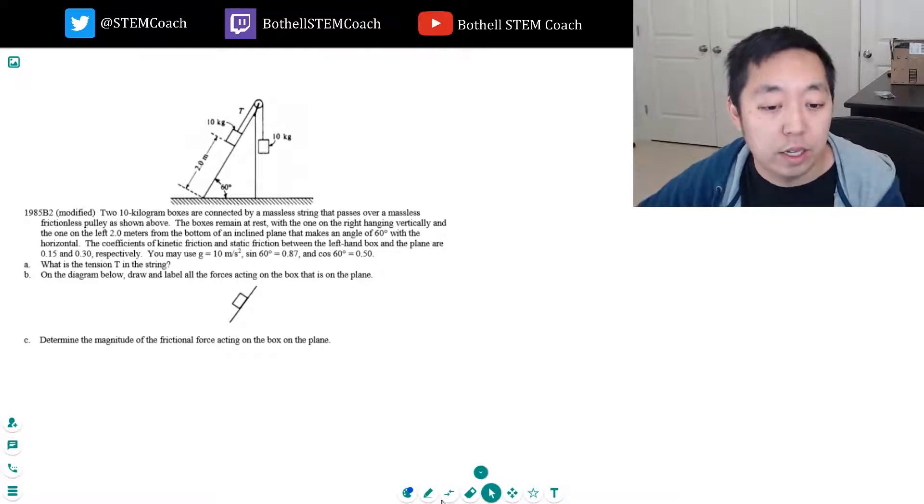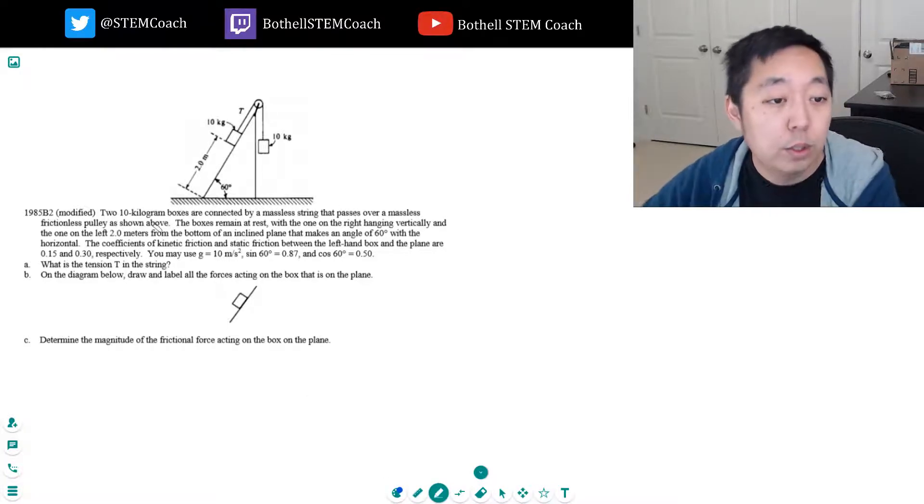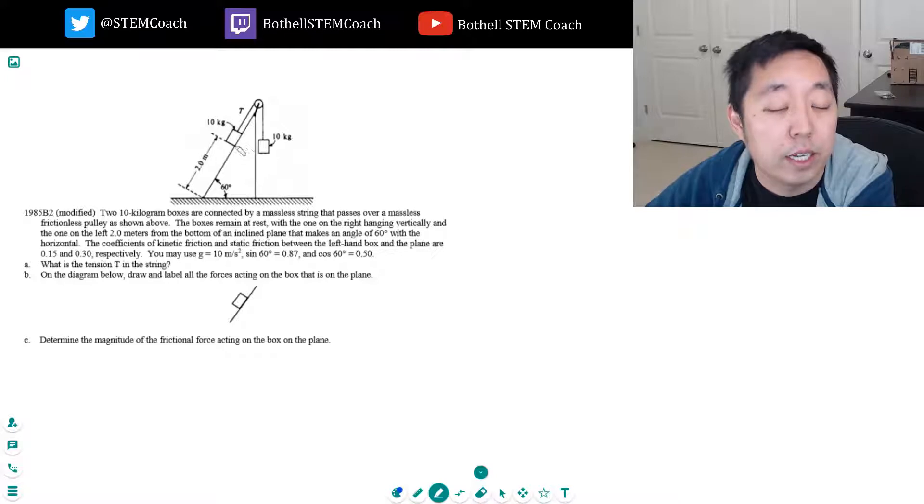So let's take a look at this question here. Two 10 kilogram boxes are connected by a massless string that passes over a massless frictionless pulley shown above. The boxes remain at rest with one on the right hanging vertically and the one on the left 2.0 meters from the bottom of the incline plane that makes an angle of 60 degrees with the horizontal.